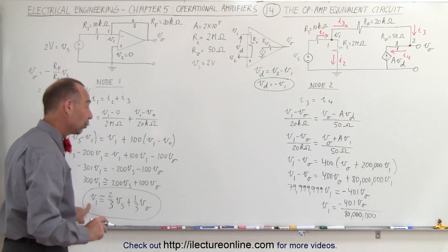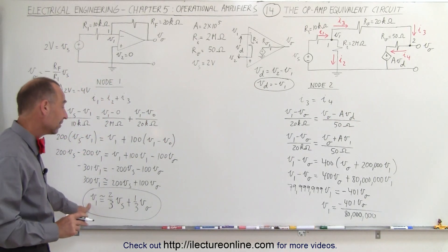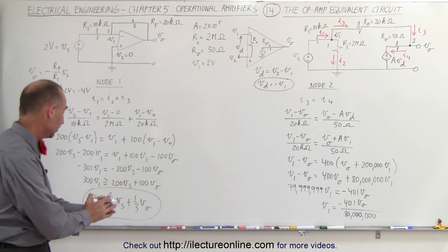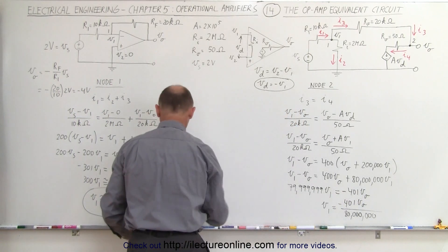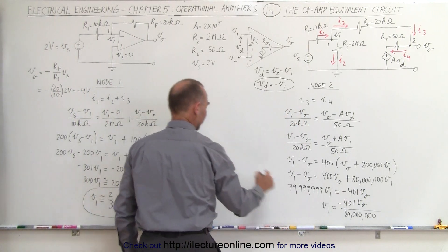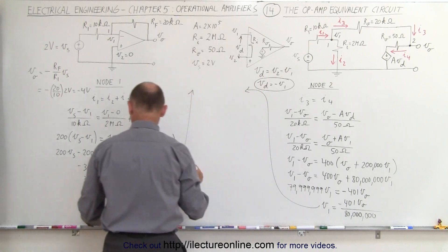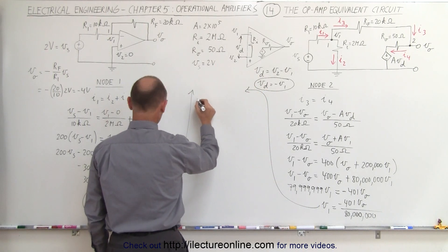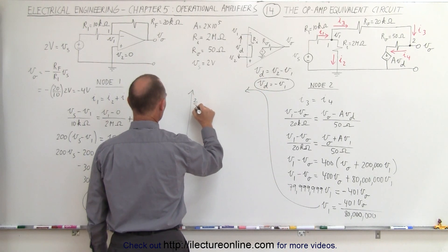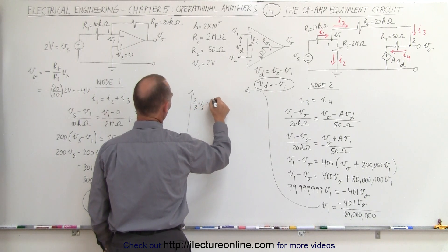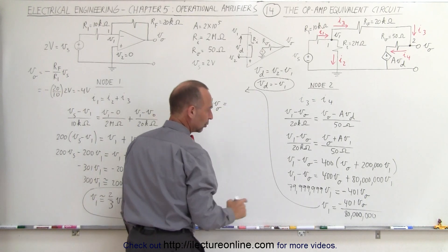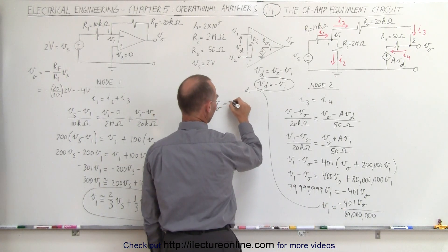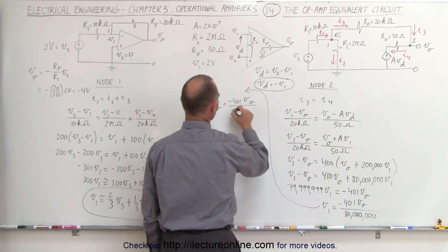Now that we have two expressions for V_1, we can combine them. Substituting into the node 1 result: (2/3)V_S plus (1/3)V_O equals minus 401·V_O divided by 80 million.